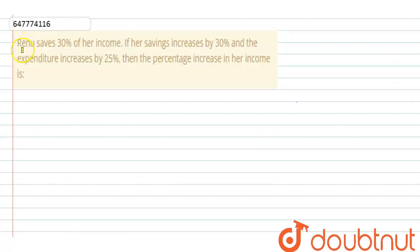Hello everyone, let's start the question. The question says, Renu saves 30% of her income. If her savings increase by 30% and the expenditure increases by 25%, then what is the percentage increase in her income?